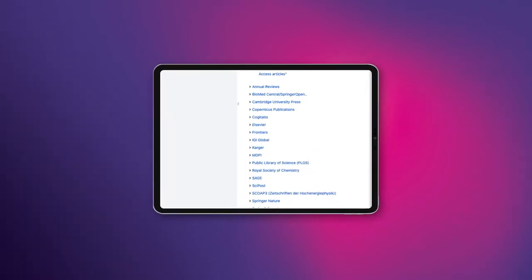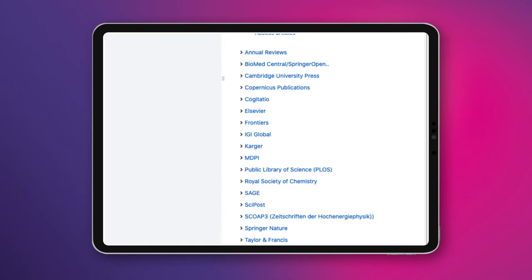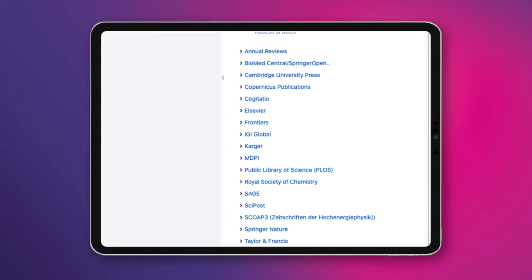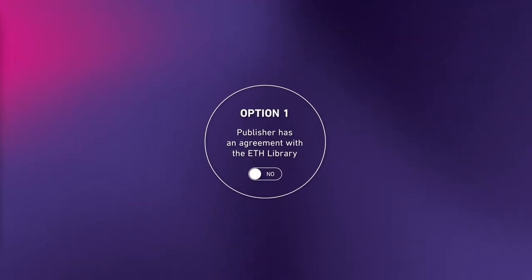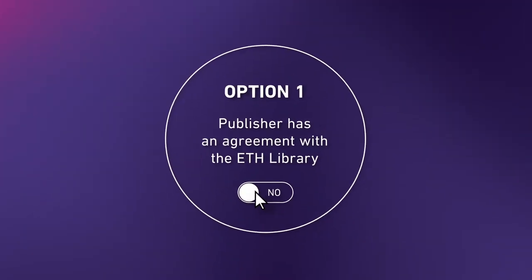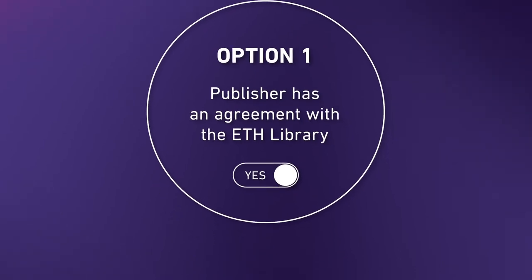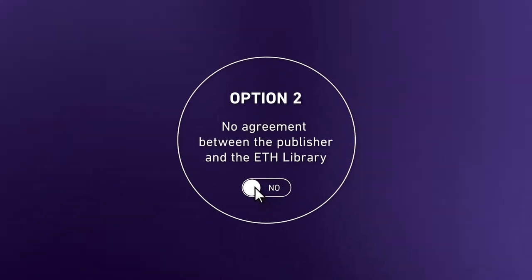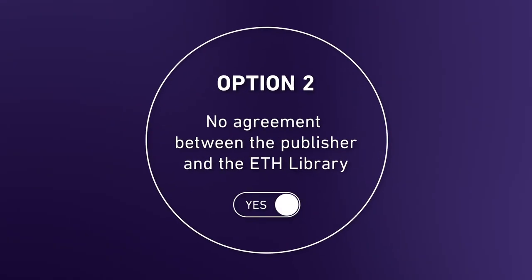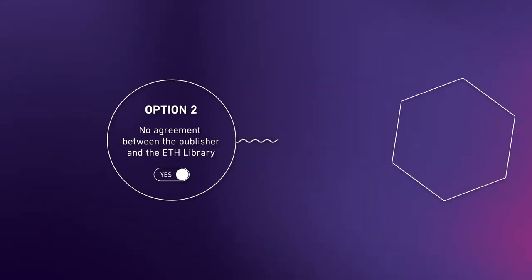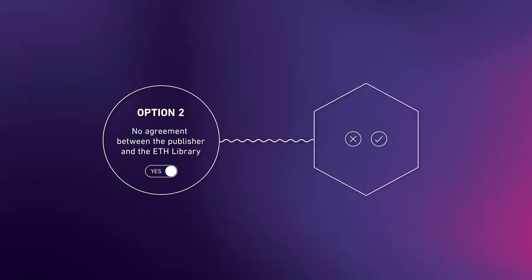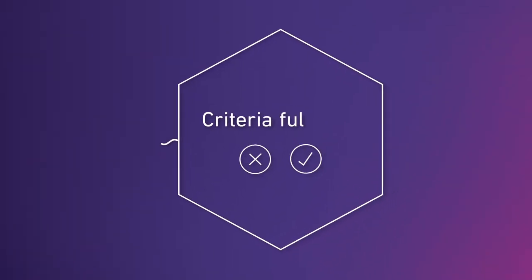Please consult the list on our website. If your publisher is on it, then all you need to do is follow the instructions provided. Please select the second option if your publisher is not on the list. Make sure that your article fulfills the eligibility criteria.